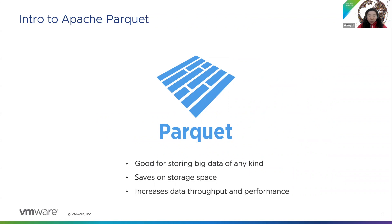Here are some of the benefits of Parquet. First, Parquet is good for storing big data of any kind, including structured data tables, images, videos, and documents. Secondly, Parquet saves on storage space — it uses columnar storage, highly efficient column-wise compression, and flexible encoding schemes for columns with different data types. What's more, it increases data throughput and performance using techniques like data skipping, whereby queries that fetch specific column values don't need to read the entire row of data.